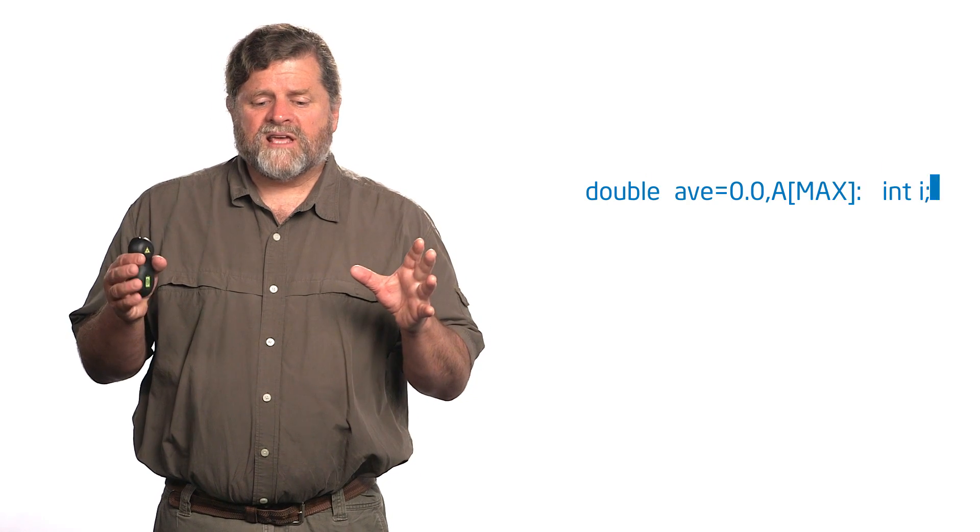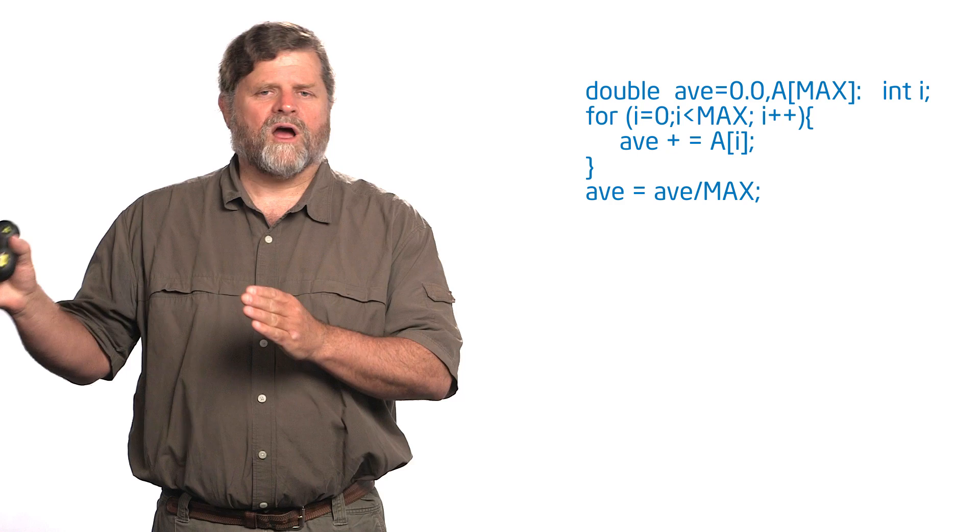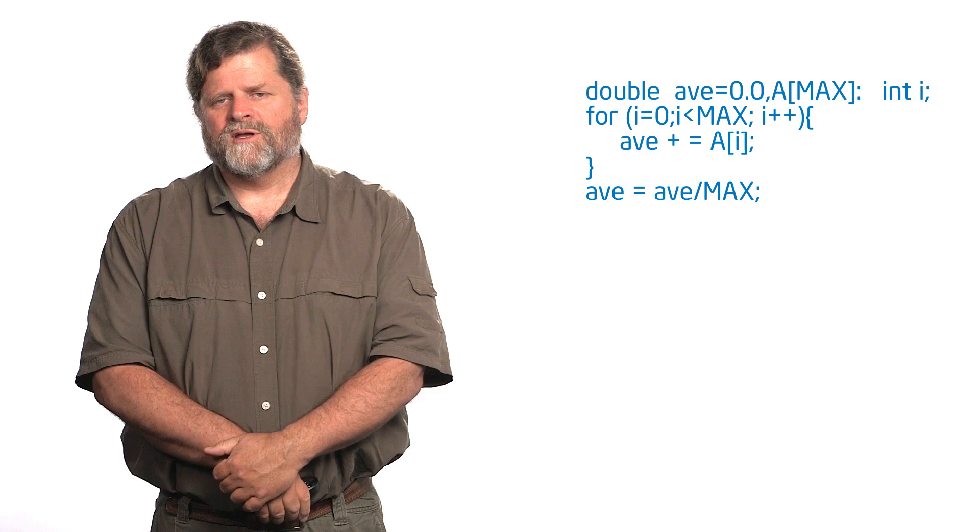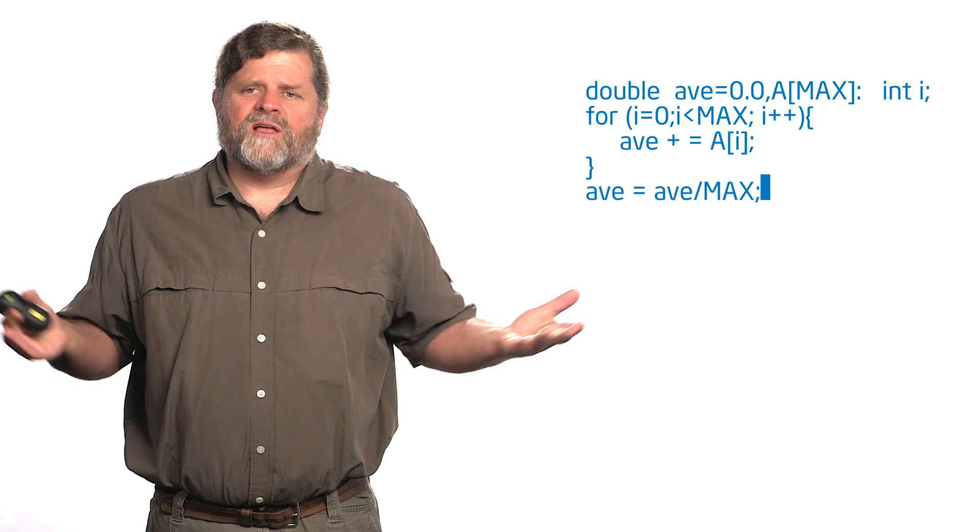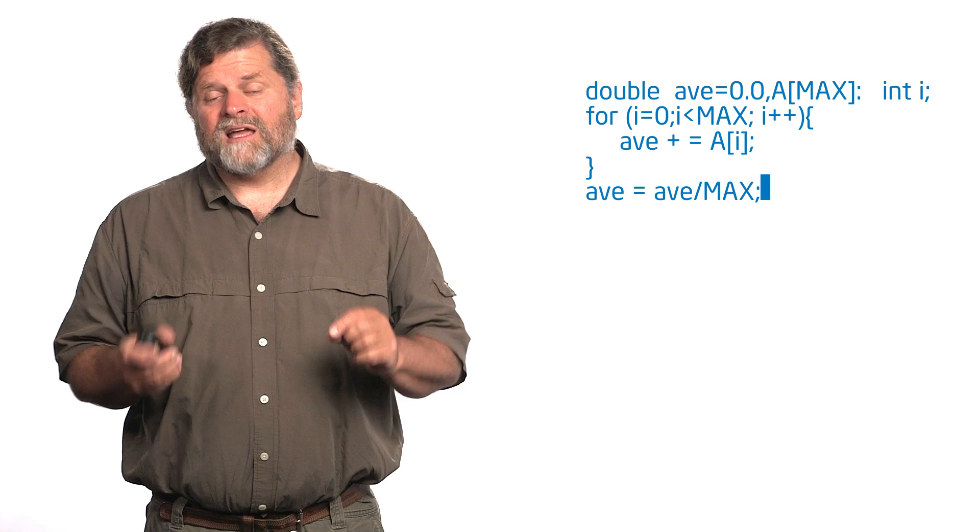Now there's one case that comes up time and again. Imagine I have, and in this case I'm computing an average. So I'm going over an array, marching across the array, and I'm accumulating the elements of the array by summation into a single value. Then I'll divide by the number of array elements and I'll get an average. This happens a great deal.